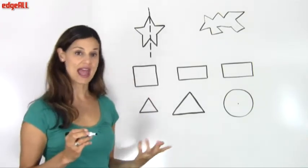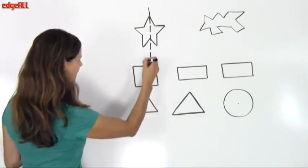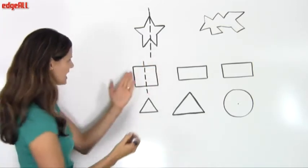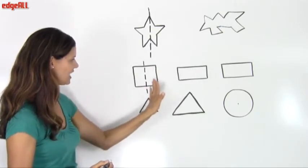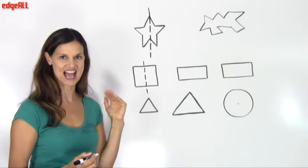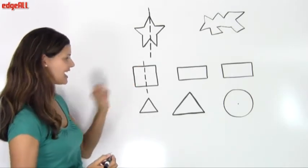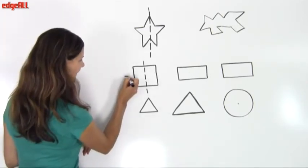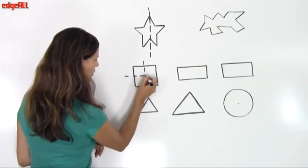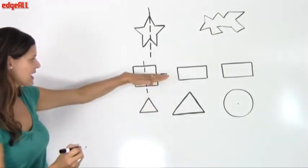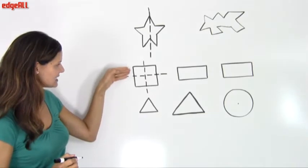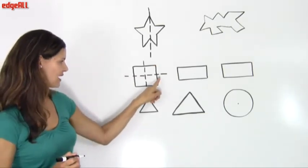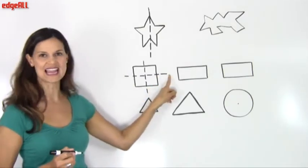First of all, the square has a vertical line of symmetry. If I draw a line right down the middle vertically, I can see that the shape on this side of the line is a mirror image or a reflection of the shape on the other side. There's another line of symmetry that goes exactly through the middle horizontally, and I can see that the shape above it is a reflection of the shape below it. So this is a second line of symmetry.